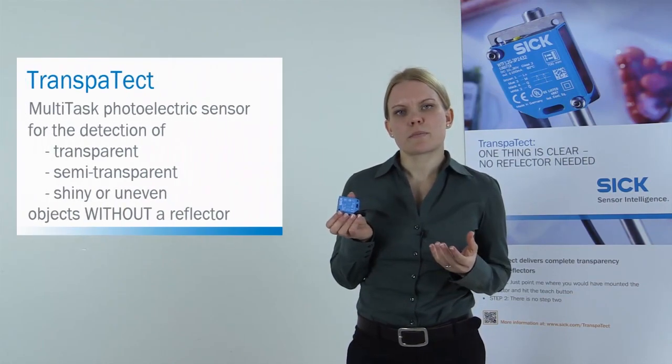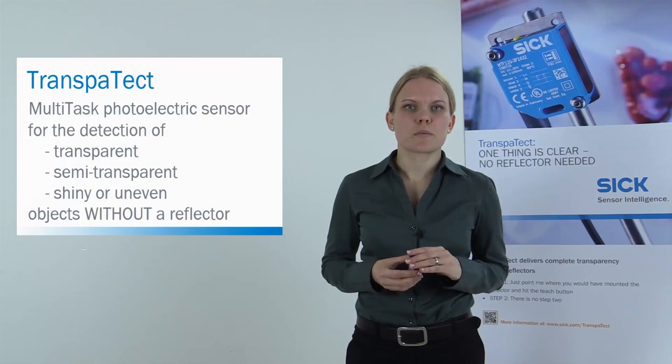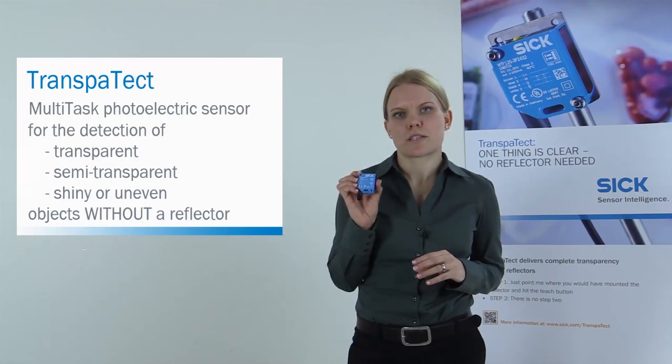Today I would like to present our new multi-task sensor, Transpatect. Transpatect is a photoelectric sensor for the detection of transparent objects as well as objects with shiny or uneven surfaces without the use of a reflector. The big advantage for you? Let me show you in this video.